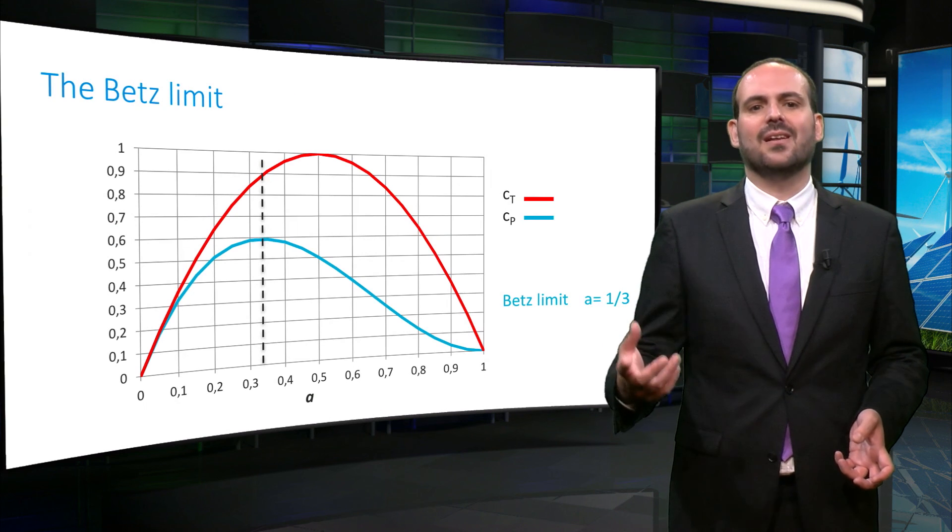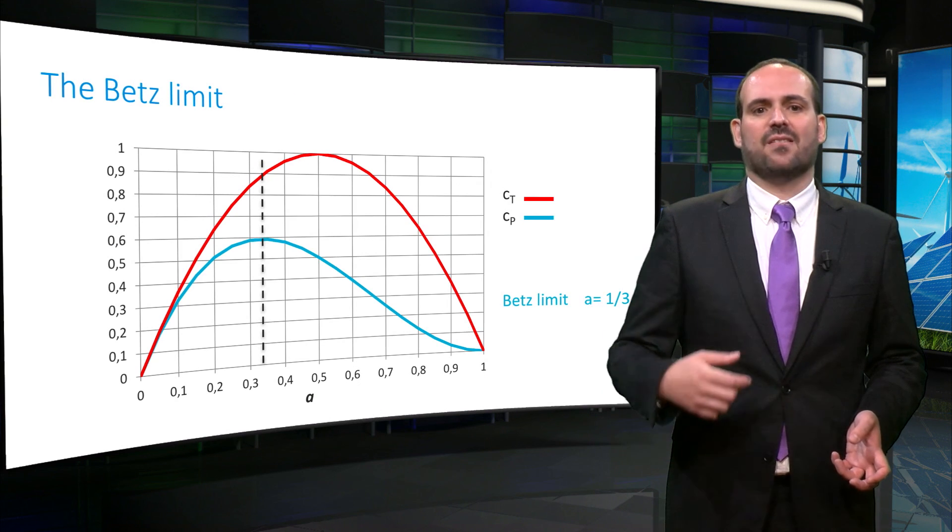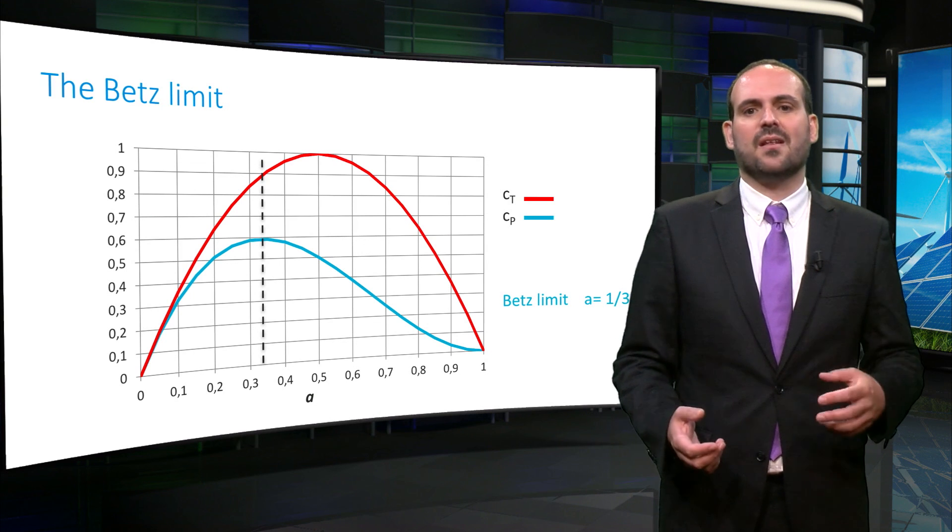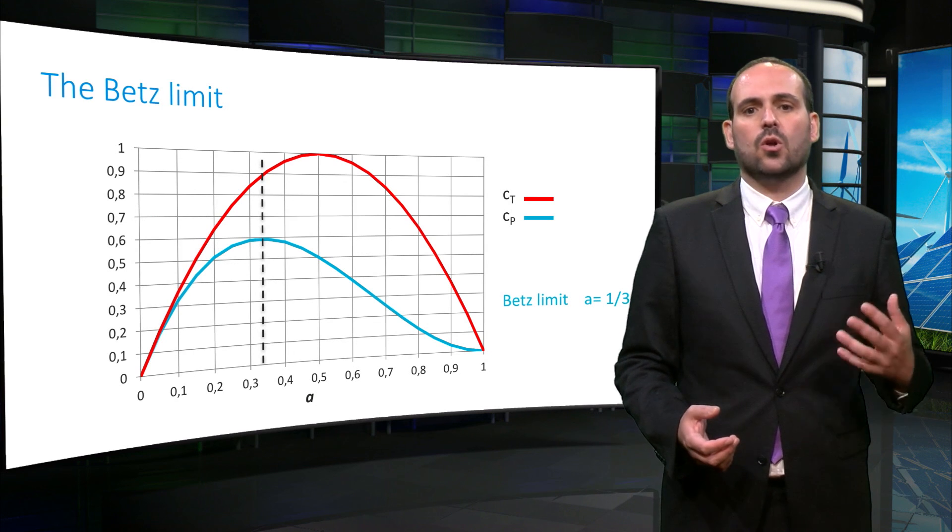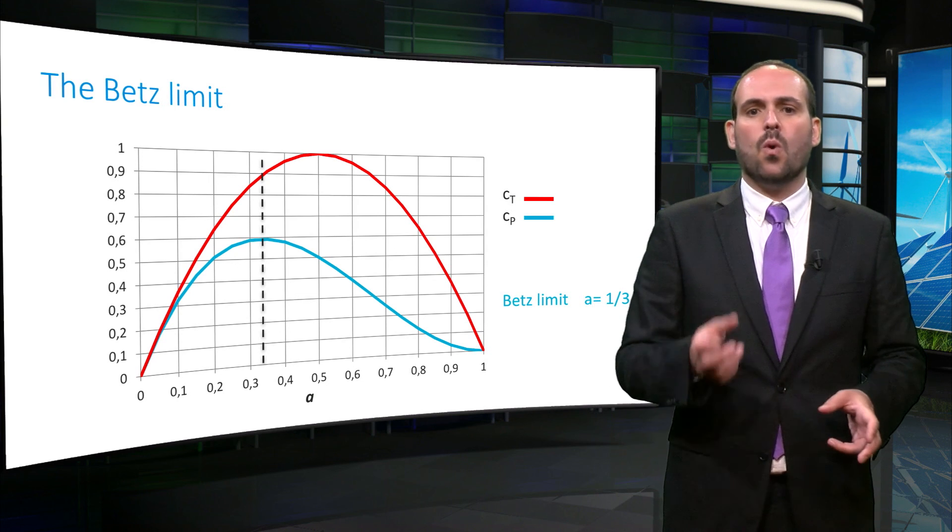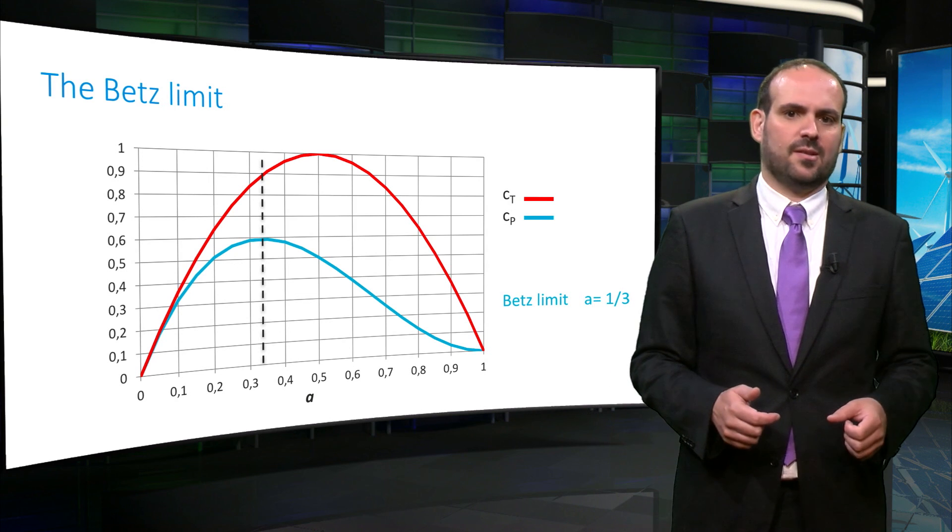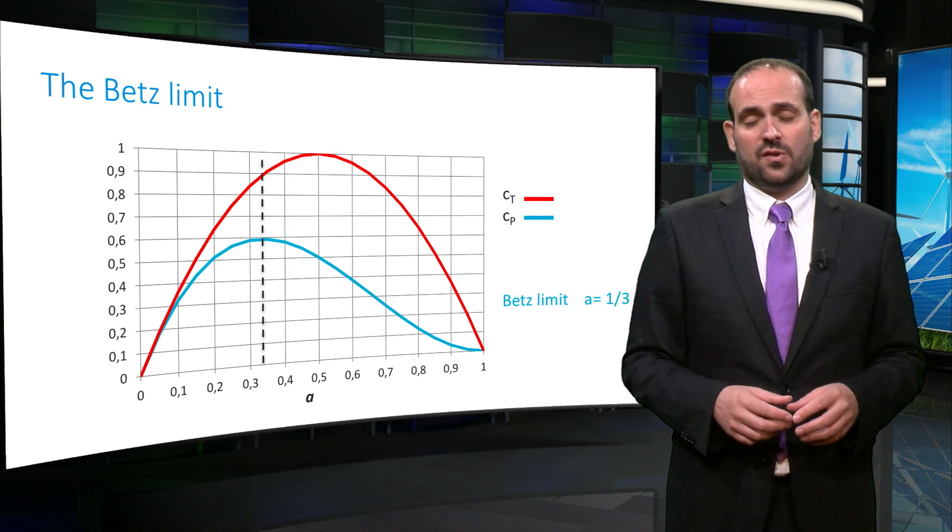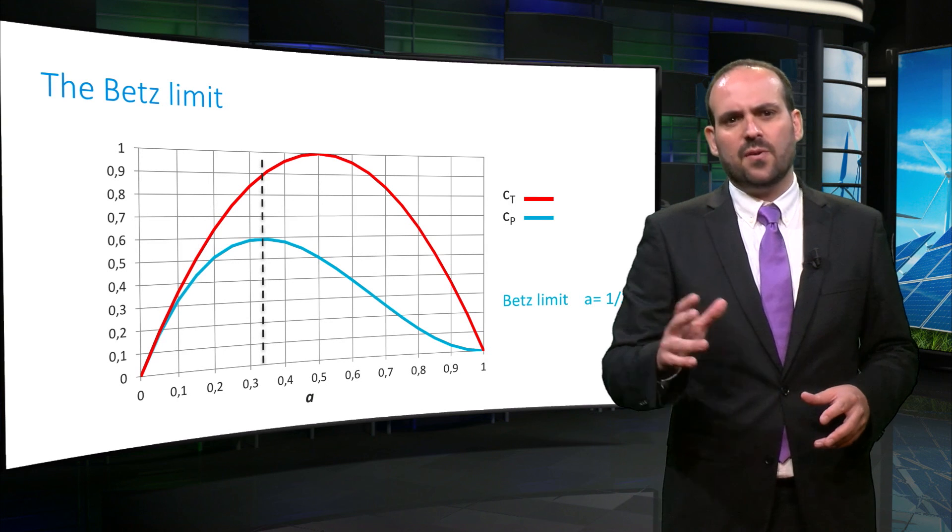When plotting the power coefficient as a function of the induction factor, we can see that the maximum power coefficient will occur when the flow is decelerated by one-third at the actuator disk. This will result in a power coefficient of about 59%.